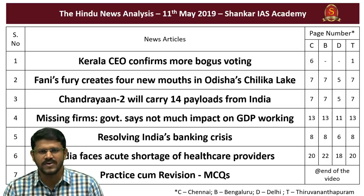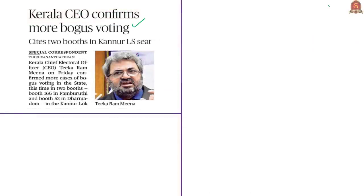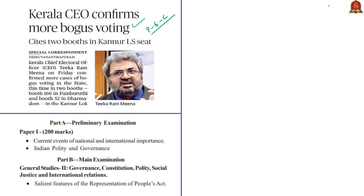The first article of the day appears on page number 6 in the Chennai edition. The news article is about bogus voting that happened in two booths in Kerala as reported by the Chief Electoral Officer. This article will be helpful in prelims preparation under current events of national importance and Indian polity, and in mains under GS paper 2 under salient features of the Representation of People's Act.